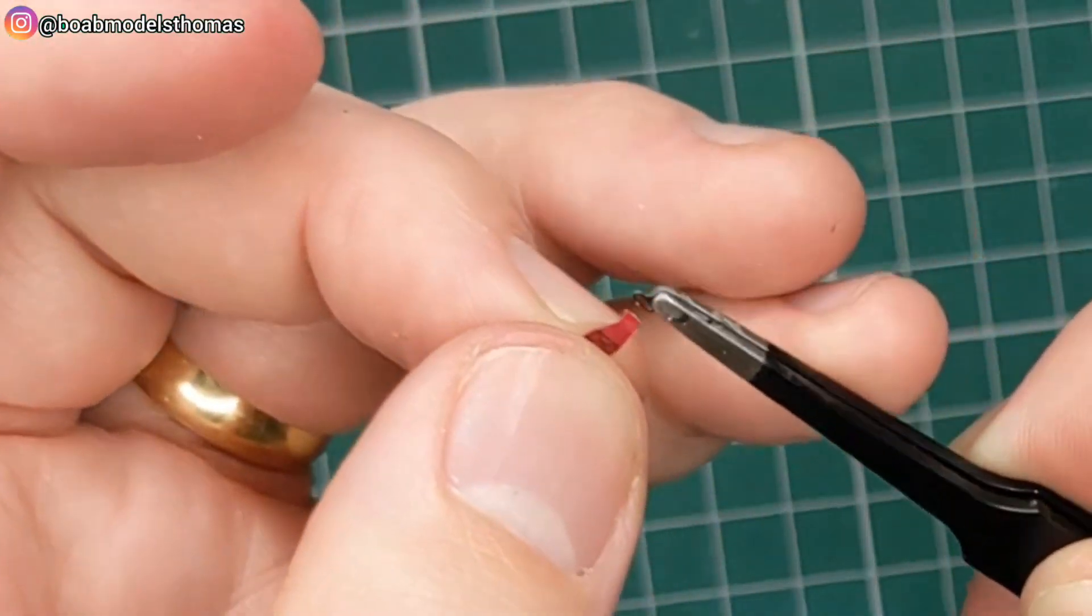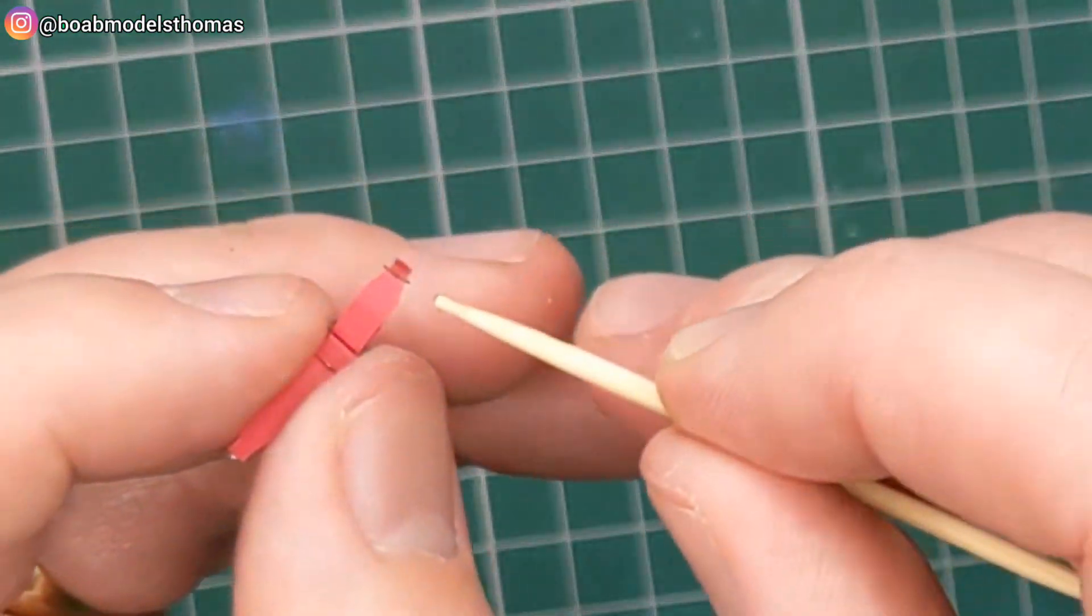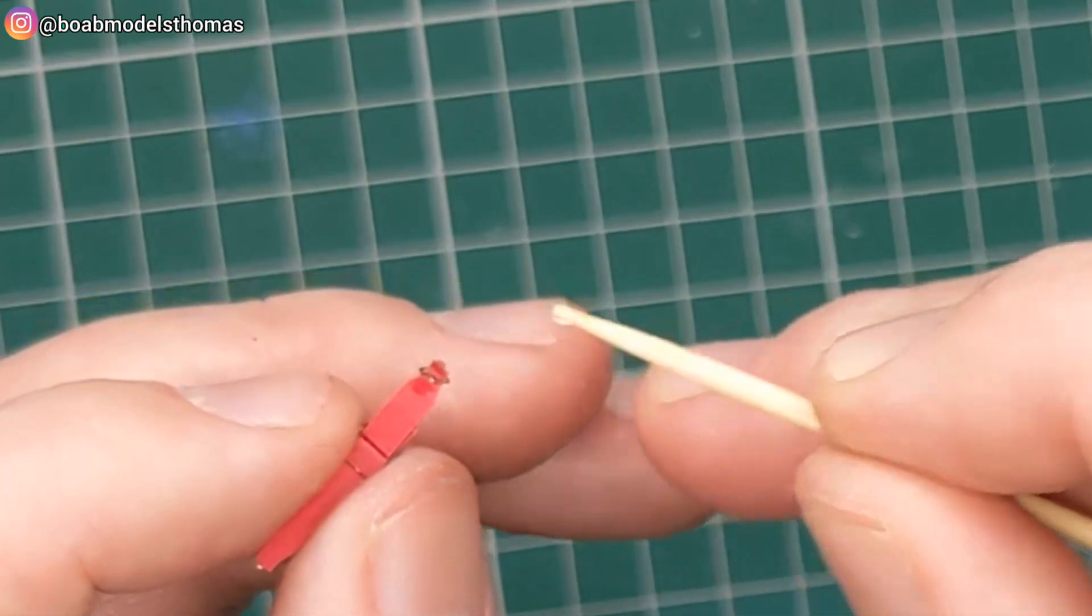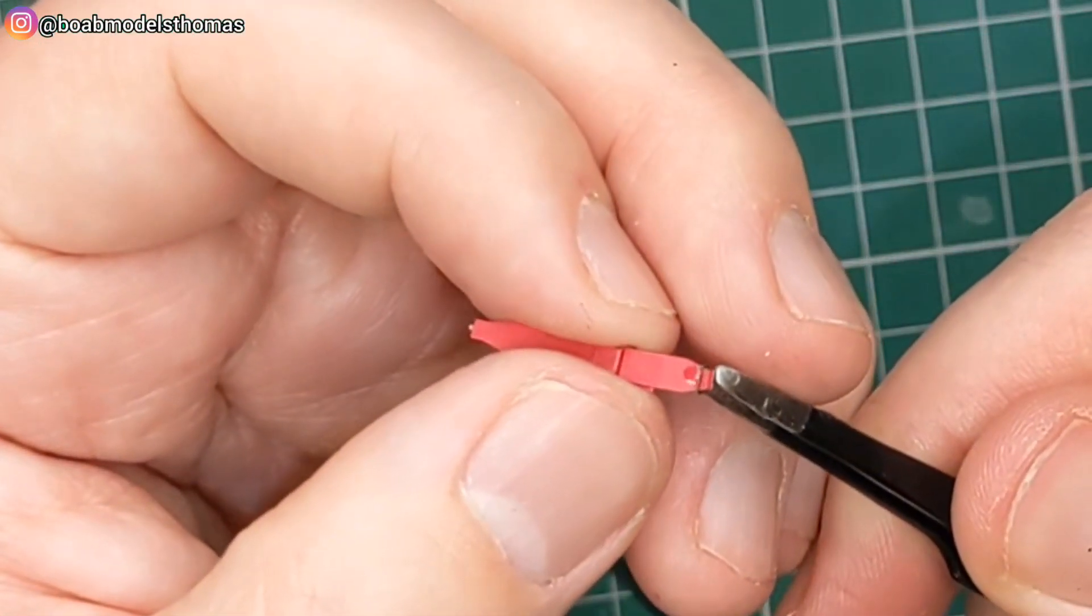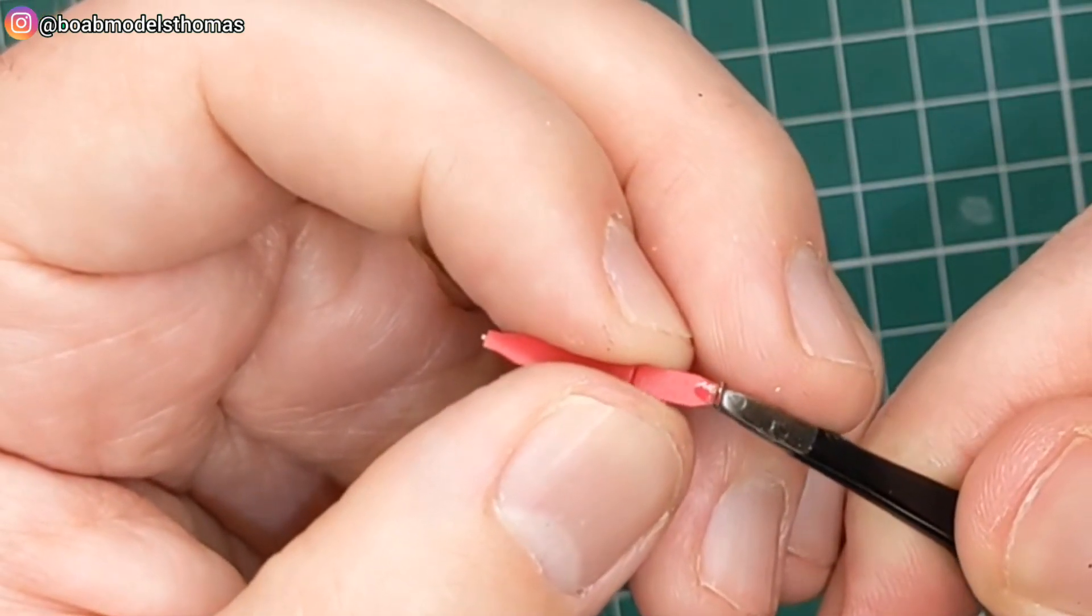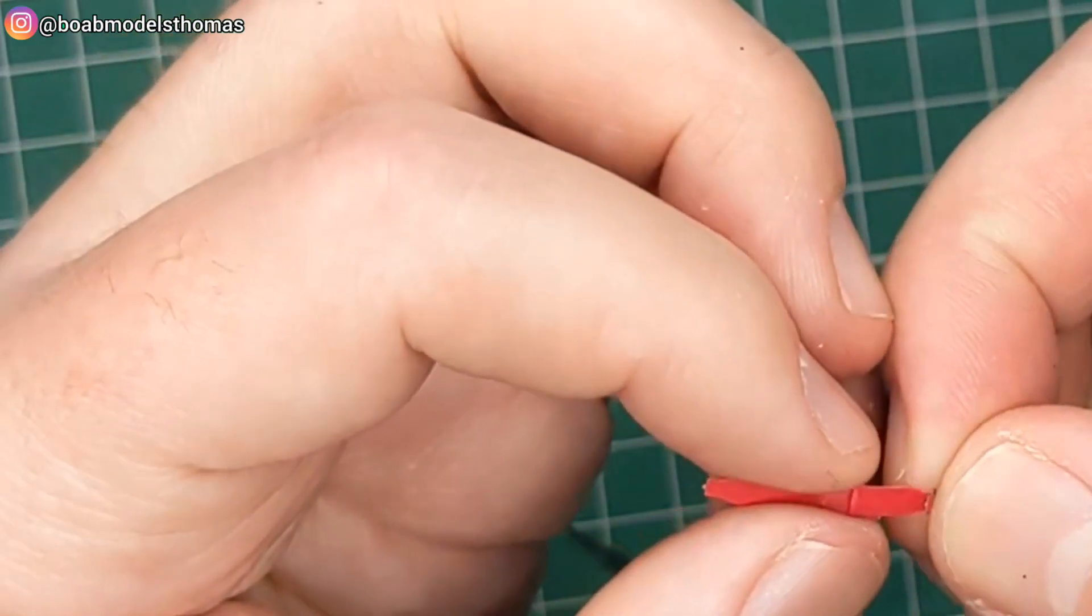And there you are. Then you've got the little buckle which goes on the end. And I decided not to attach the buckles that fitted to the floor because it wouldn't have actually fitted the space which is inside the car. You wouldn't see that detail anyway.